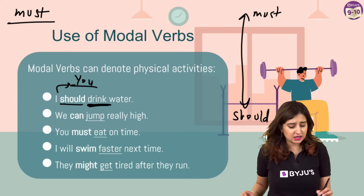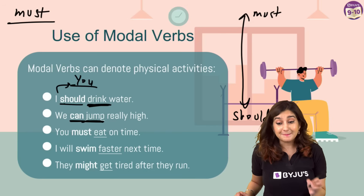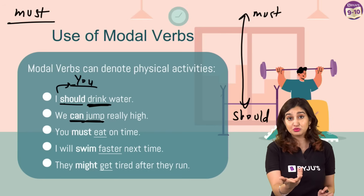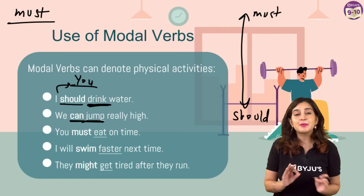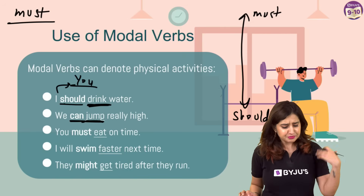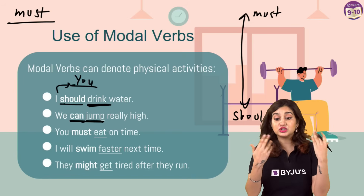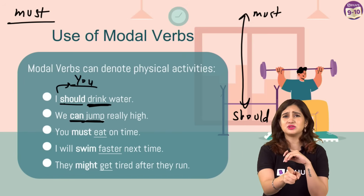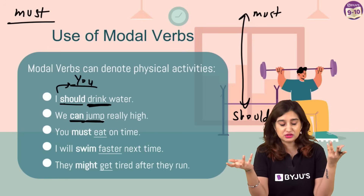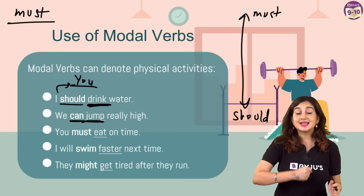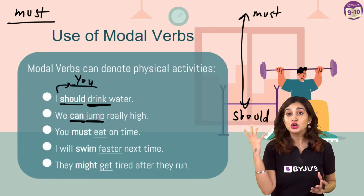'We can't jump really high.' Here the physical activity is jumping - jump is your verb, and the modal is telling you about your ability to jump. Can shows ability: you are able to jump, you are capable of jumping. 'You must eat on time' - this is a necessity. Maybe you are giving a very strong suggestion that eating on time is good for health, or saying it as a necessity to someone who is unwell. Must is used for strong suggestions or talking about necessities and obligations.